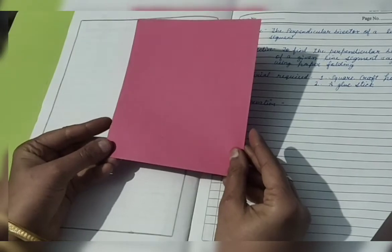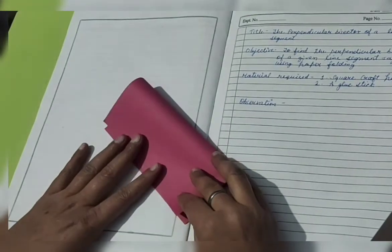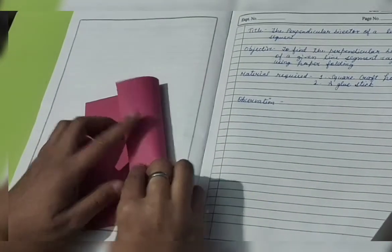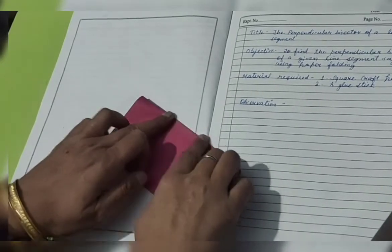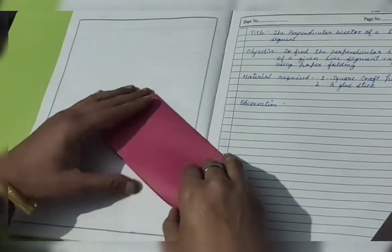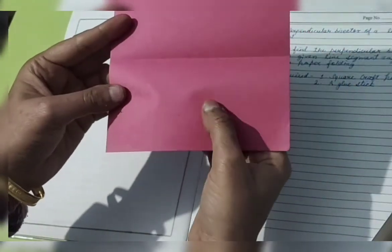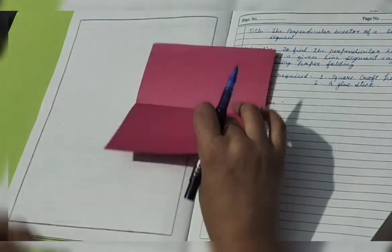You can see, and for this you just fold it once. You can fold it from the middle or you can fold it from somewhere else also. I'm folding it from middle. Now after folding, you can just see that this is the crease. We can consider this crease as a line segment and we can write its name.